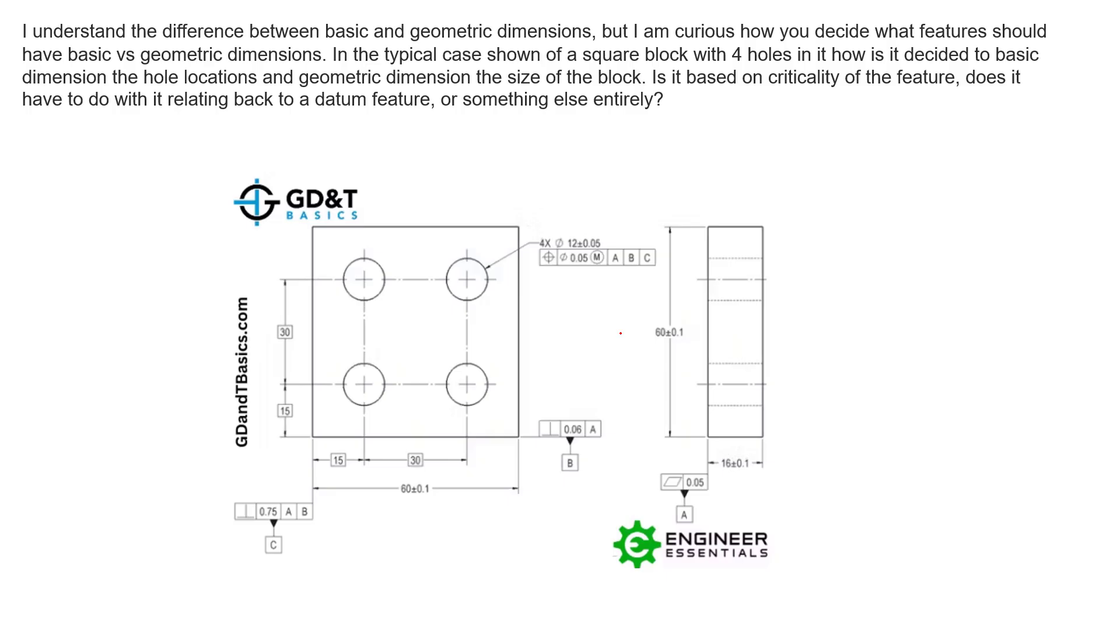So here's the block in question. And as the question stated, we have geometric tolerances and basic dimensions to locate these four holes back to the datum features that are also being controlled with geometric tolerances. Now, this is a size dimension controlling the size of this feature. And this is also a size dimension controlling the size of this feature. And also we have another one controlling the size of this feature.